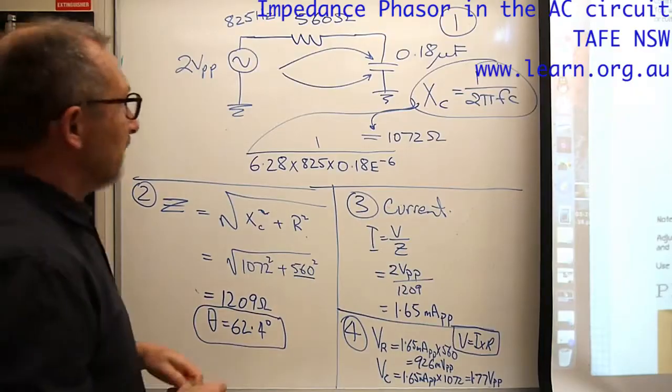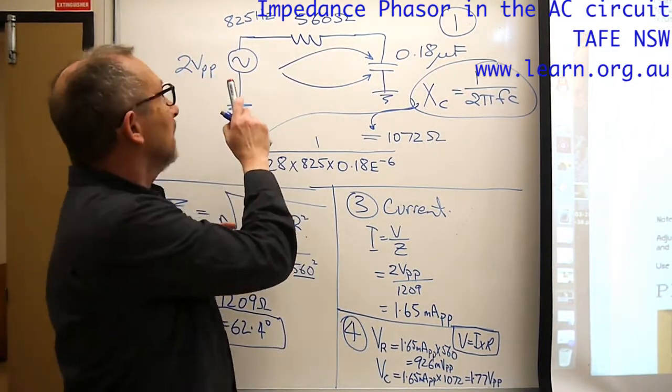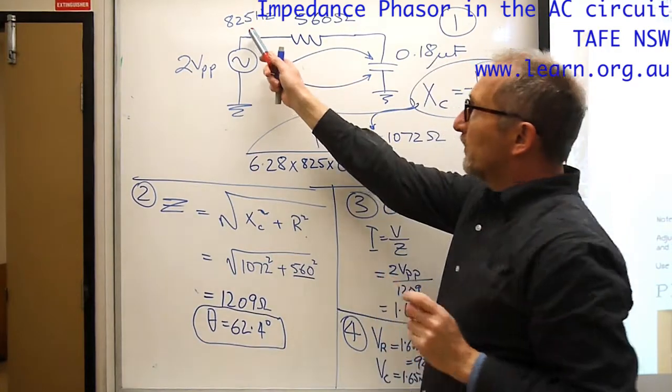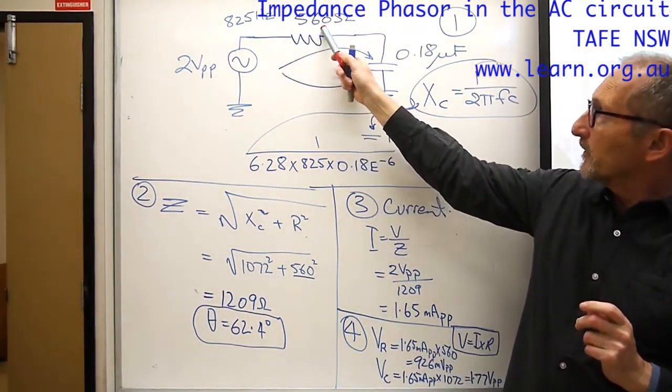So in the first part of the lab, of course 2 volts peak to peak and 825 Hz frequency and 560 ohms, 0.18 microfarads.